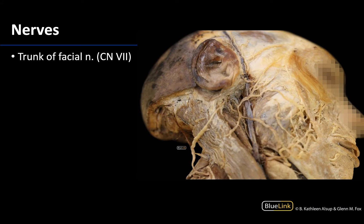Now looking at an inferior lateral view, with a good amount of the parotid gland removed, you can see the trunk of the facial nerve right here, where it is exiting the stylomastoid foramen. You can even see the styloid process right here. The trunk will fairly quickly divide into the temporofacial division and the cervicofacial division — the temporofacial being the more superior division and the cervicofacial the more inferior — then branching into those five main branches of the facial nerve that we'll talk about in the face session.